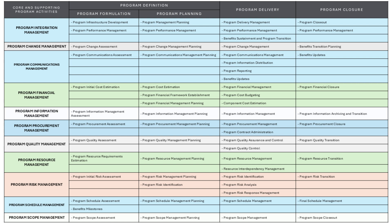Program resource management ensures that human, financial, and material resources are available and used effectively across the program. Program resource requirements estimation estimates the resources required to deliver the program successfully. Program resource management planning creates a plan to allocate and manage resources throughout the program lifecycle. During delivery, resources are allocated and managed, and any dependencies between resources are identified and handled through resource interdependency management. At program closure, resources are released or transitioned to other projects or operational roles.